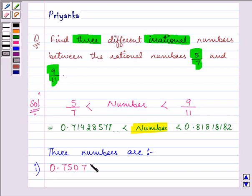0.75075000750007500007540075 and so on. These are irrational numbers, that means they are non-terminating, non-recurring numbers.